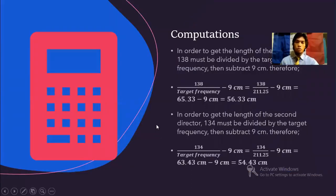For the length of the first director, 138 must be divided by the target frequency and then subtracted by 9 centimeters. So 138 over 211.25 minus 9 centimeters is equal to 56.33 centimeters. For the length of the second director, 134 must be divided by the target frequency and then subtracted by 9 centimeters. So 134 over 211.25 minus 9 centimeters is equal to 54.43 centimeters. And the reason for subtracting 9 centimeters is because during the initial testing of the antenna, there was another channel that was being received. So to prevent the channel from being received, the lengths of the two directors had to be reduced. So reduce them by 9 centimeters.